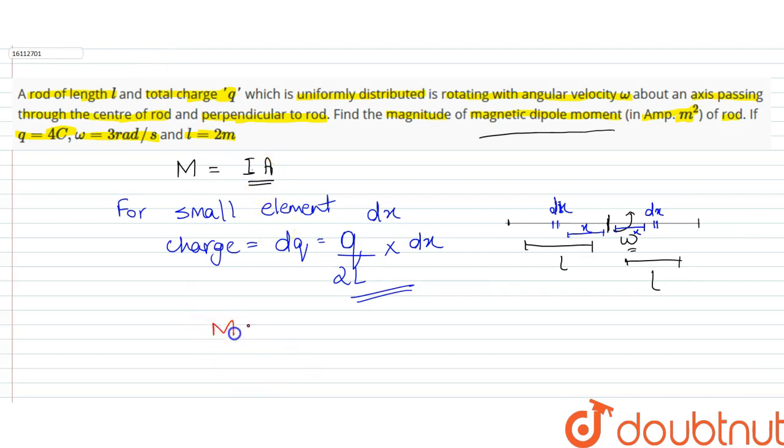So what happens if we take current? Current is charge upon time taken. Time taken will be 1/omega, where omega is angular velocity, into area.